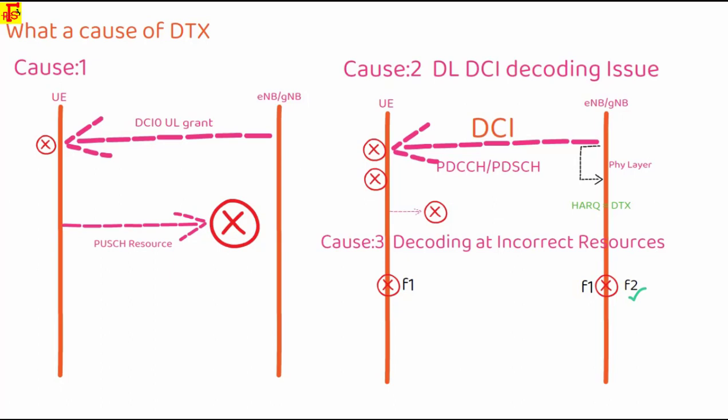So these are the three main reasons where DTX is observed. I hope you understand what is DTX. It's like a malcontent signal, an unwanted packet. We get DTX for some reasons like DCI decoding issue or uplink grant issues.